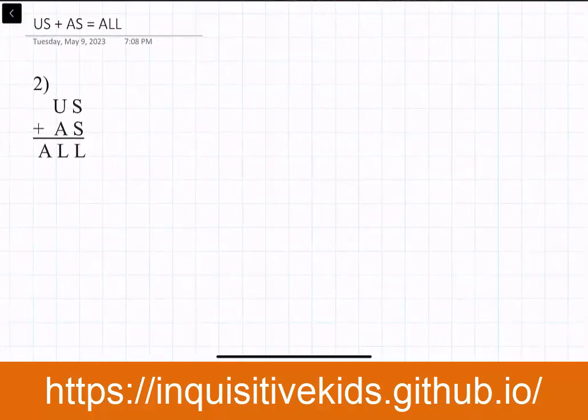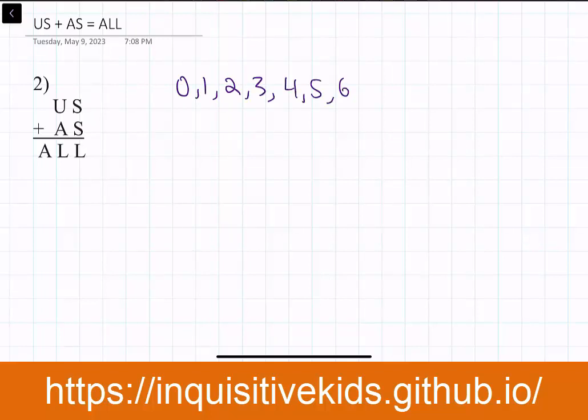Welcome back to our second problem of this cryptarithms playlist. US + AS = ALL. Again, you can start by listing out our digits. Zero, one, two, three, four, five, six, seven, eight, and nine.